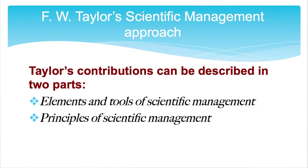Taylor's scientific management theory can be described under two parts: elements and tools of scientific management, and principles of scientific management. Under elements and tools, he said there should be separation between planning and doing tasks — managers devoted to planning, workers concentrated on doing. Proper job analysis should minimize the motion activities of the worker. There should be time studies and motion studies, and workers should be fairly paid since proper remuneration motivates them to work.